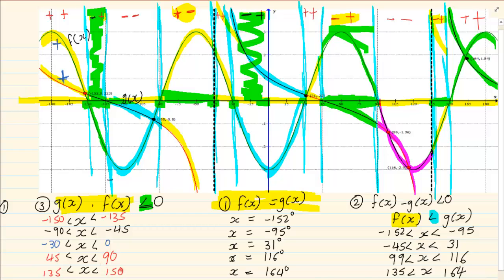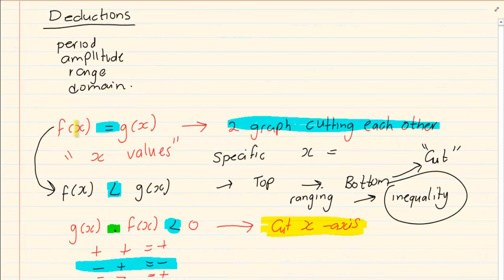Notice every time I'm giving an inequality, I'm going from the lowest to the highest. The answers are always relevant to x, not y. So the three types of deductions we get are: when it's an equal to, which gives specific x values; then where one graph is greater than another, based on where the two graphs cut; and when one times another is less than or equal to zero, that is when they cut the x-axis. Thank you for watching.